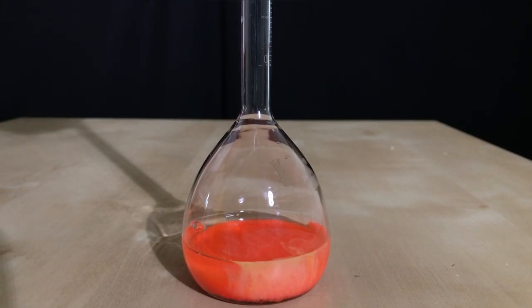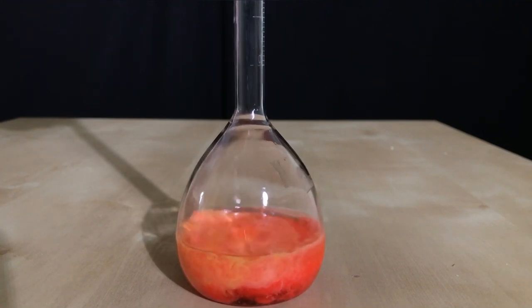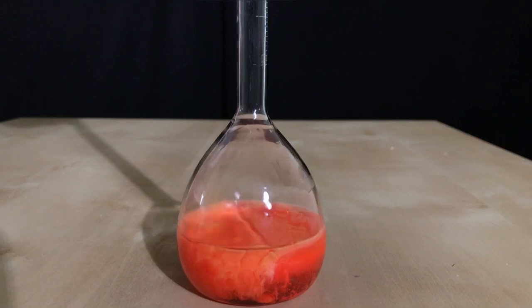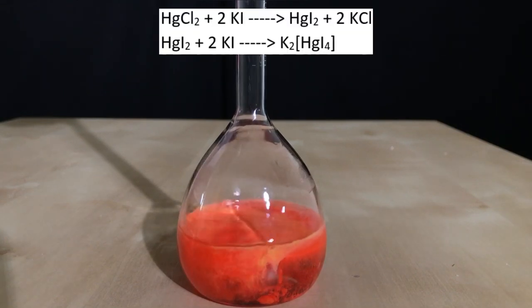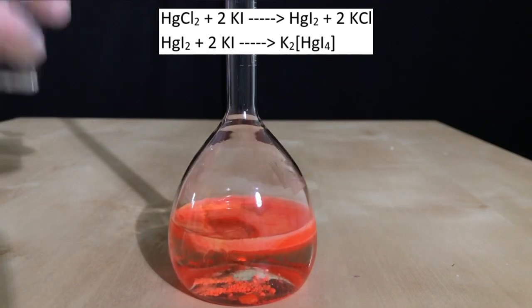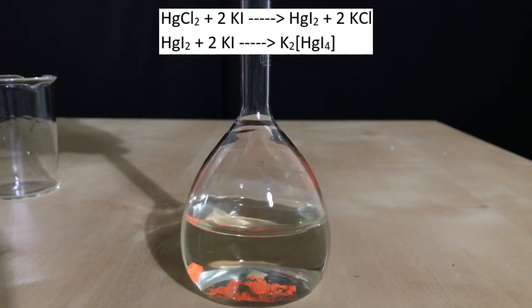When we add even more potassium iodide solution than needed, something interesting is going to happen again. The red color is going to disappear. This is because the mercury iodide reacts with excess potassium iodide to form potassium tetraiodomercurate. Potassium tetraiodomercurate is water soluble as you can see here.